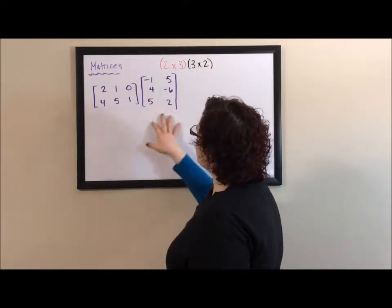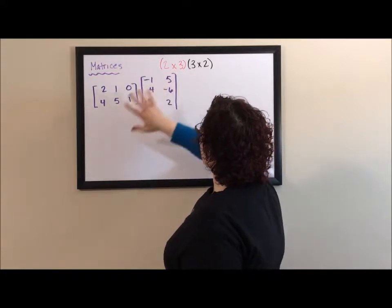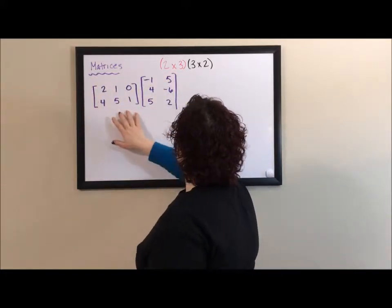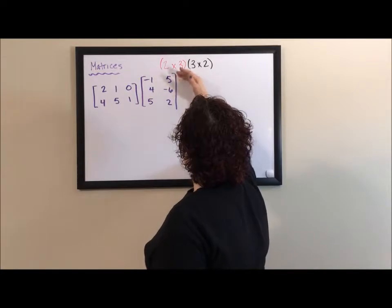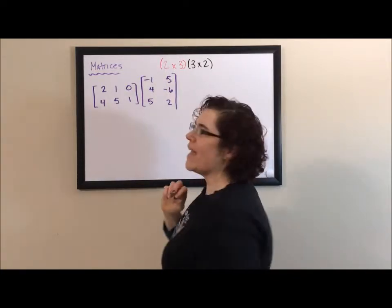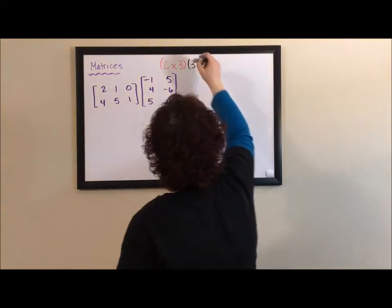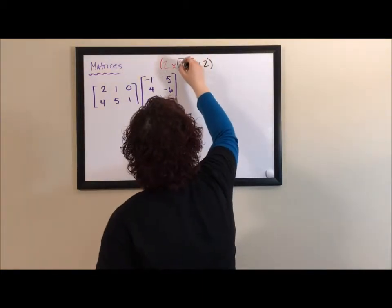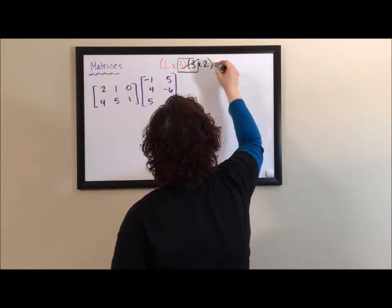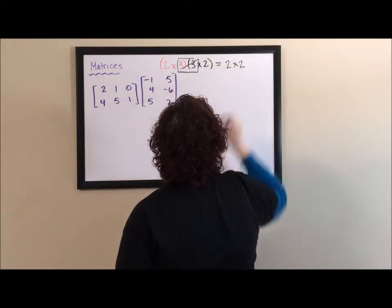For two matrices to be able to be multiplied, the number of columns in the first have to match the number of rows in the second. In other words, these middle numbers have to be the same. If they are the same, then you can multiply and the resulting matrix is the remaining numbers — two by two.